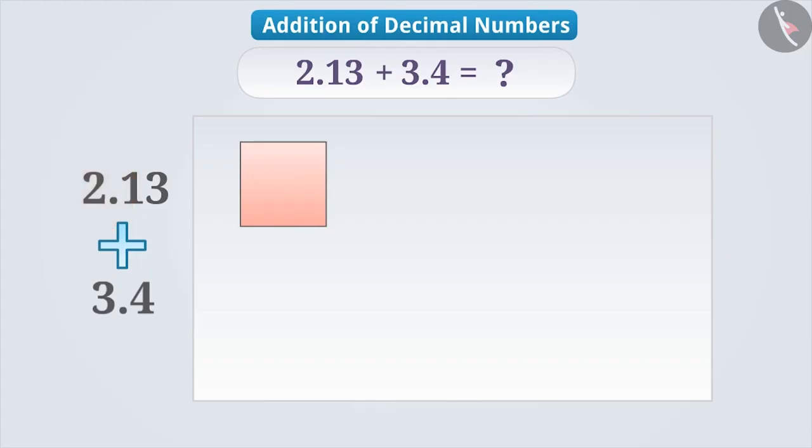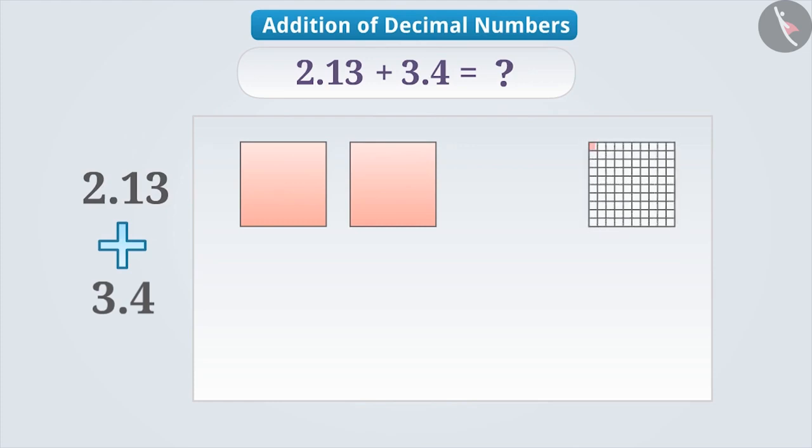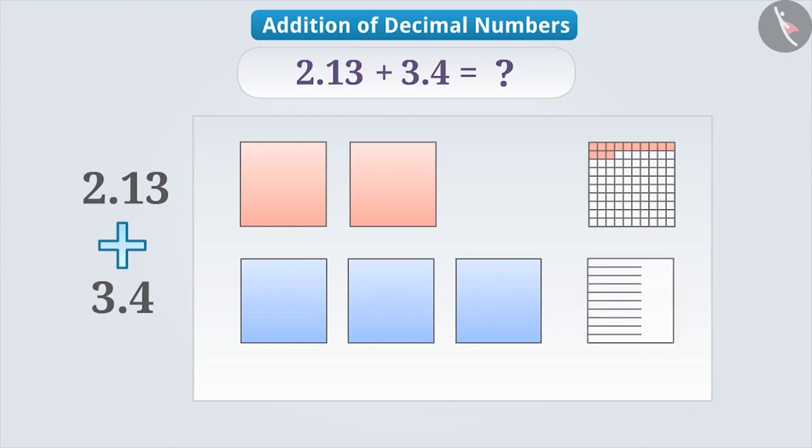we will consider two such squares. And to represent 13 hundredths, we will take a whole, which is divided into 100 equal parts and shade 13 parts of it. Similarly, in 3.4, there are three wholes, so we will take three such squares. And to represent four tenths, we will take one more square, which is divided into 10 equal parts and shade four parts of it.